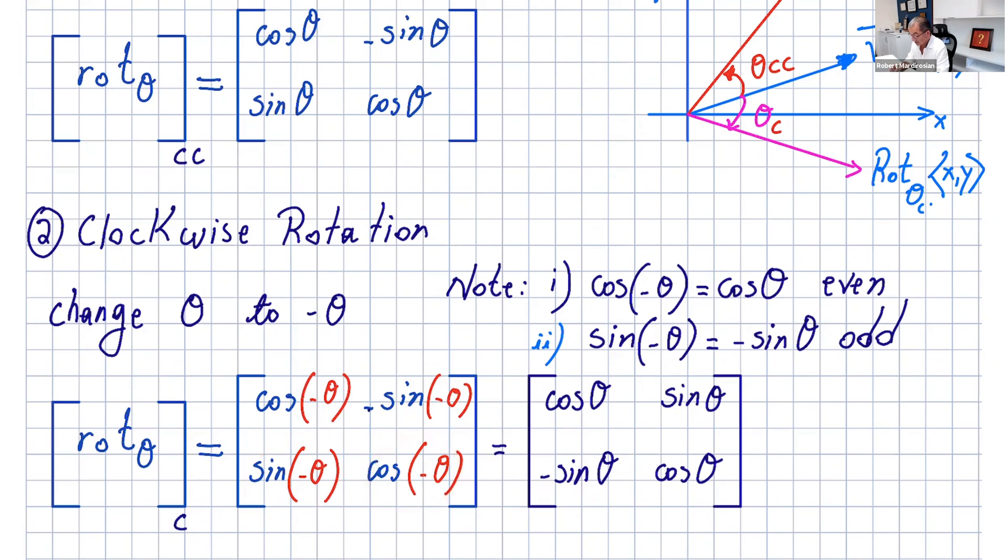However, from trigonometry, remember that cosine is an even function and cosine of negative theta is cosine theta, and sine is an odd function and sine of negative theta is negative sine theta.